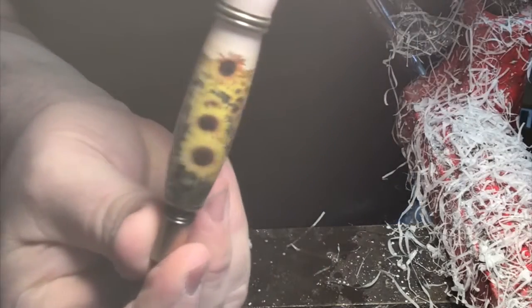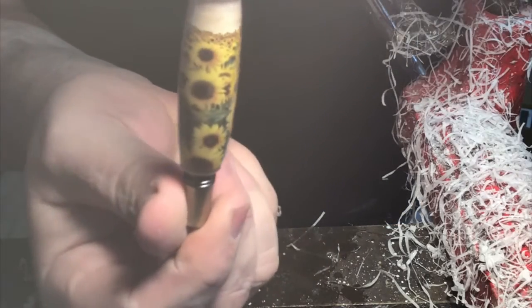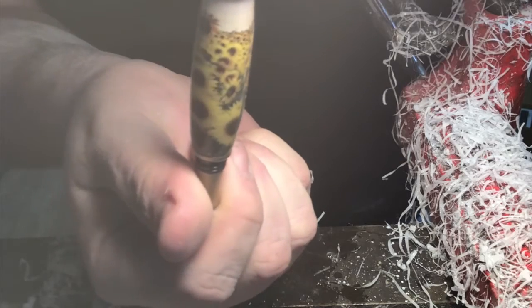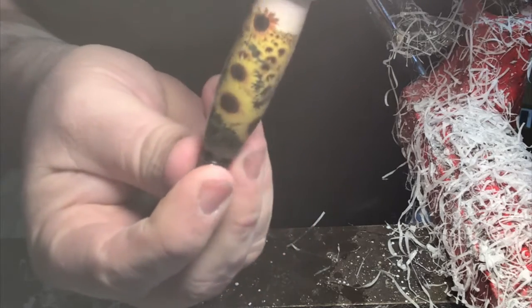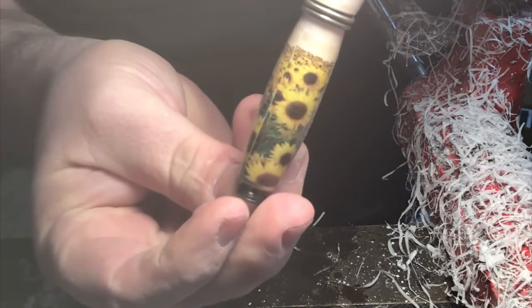All right, so here's our finished product. A sunflower and sky pin on a Modesto rollerball. Hope you guys enjoy it. Thank you for watching the video and we will see you on the next one.